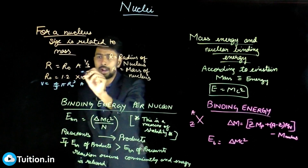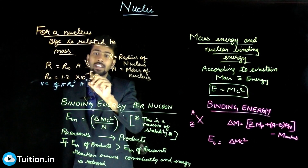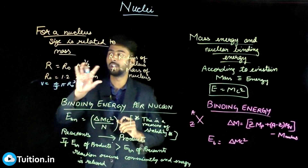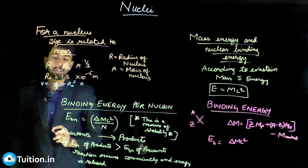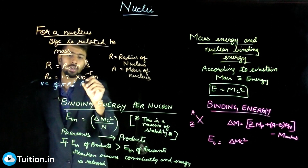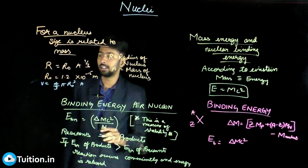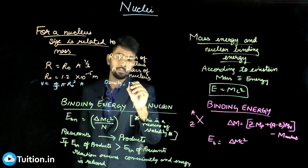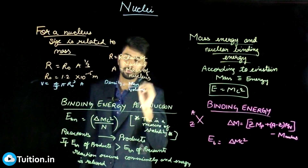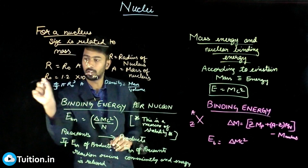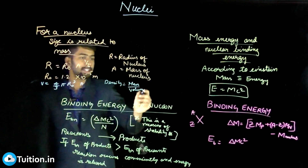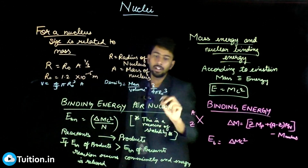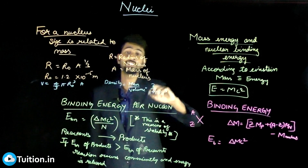The mass of the nucleus is the mass number A times 1.6 × 10⁻²⁷ kg (to convert to SI units). The density of the nucleus is mass divided by volume, which gives A divided by V. That simplifies to 3/(4π r₀³). Since r₀, 4, 3, and π are all constants, the density of every nucleus is constant — whether it's hydrogen, oxygen, or any other nucleus.